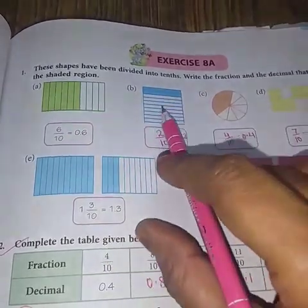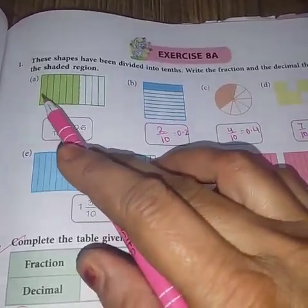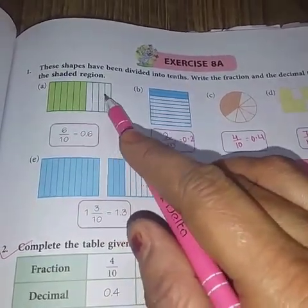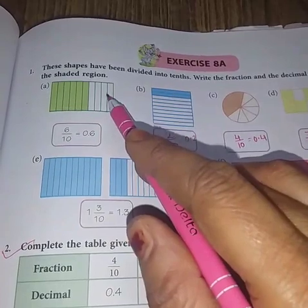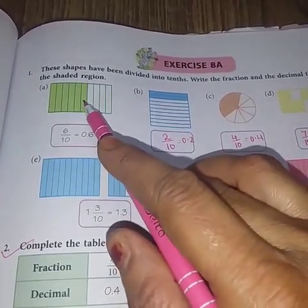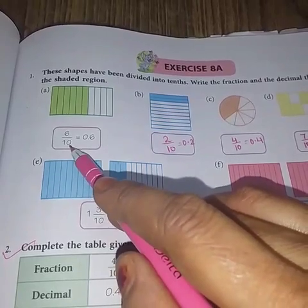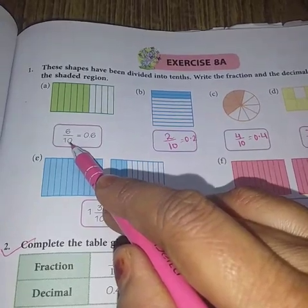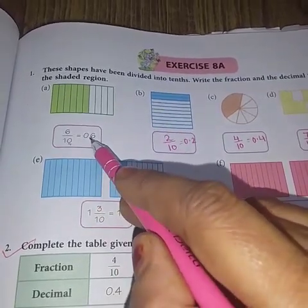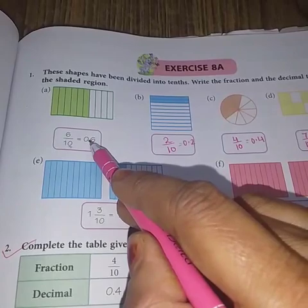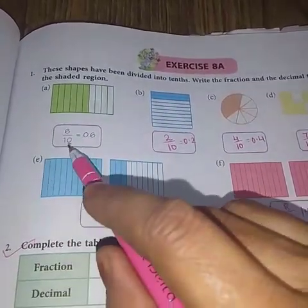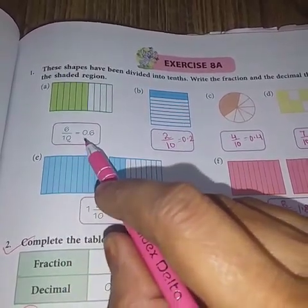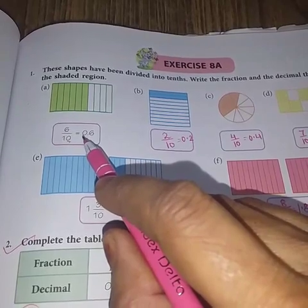So these are some of the shapes. Here we can see this shape is divided into 1, 2, 3, 4, 5, 6, 7, 8, 9, 10, 10 parts. Out of 10 parts, 6 are shaded. So we will write down 6 upon 10. We have 1, 0 in the denominator. So before 1 digit, we will put the decimal or point. 6 se pehle decimal a jayega. Answer is 0.6. Decimal se pehle 0 likhna zaroori hota hai.